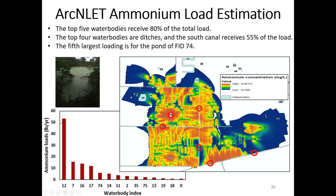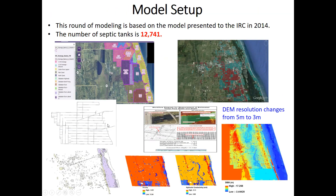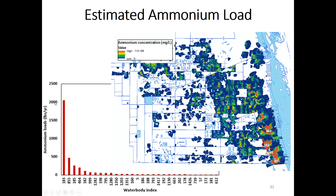This is the estimated ammonium load for the larger area with ~12,000 septic tanks. For the small calibration area, the maximum ammonium load was about 52 lb/year. For the entire area, the load rises to about 2,000 lb/year, with some areas showing really high ammonium loading. The area south of the main canal — near the south canal — shows particularly high ammonium concentrations.